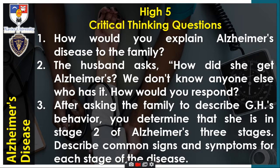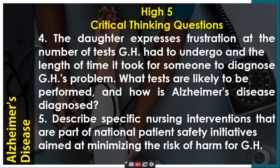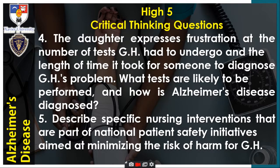Number three: After asking the family to describe GH's behavior, you determine that she is in stage two of Alzheimer's three stages. Describe common signs and symptoms for each stage of the disease. Number four: The doctor expresses frustration at the number of tests GH had to undergo and the length of time it took to diagnose GH's problem. What tests are likely to be performed and how is Alzheimer's disease diagnosed?